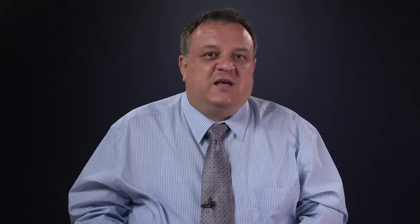For example, if we can collapse all the documents about patients, doctors, and hospitals into one place, we may consider them to be semantically similar, even though they contain different words in that set.